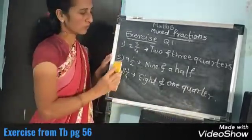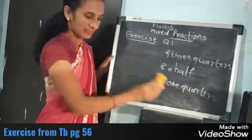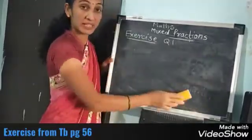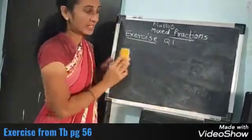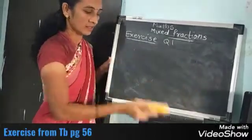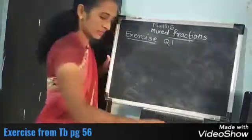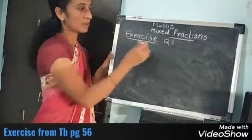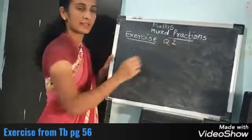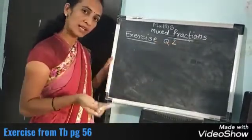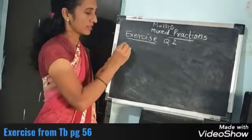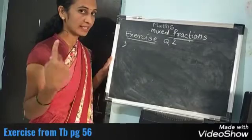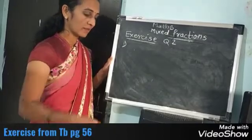Now we will see question number 2. What is question 2? Read the following fractions and write them in figures — write the fraction for those words. They have given you the fractions in words and you have to write them in figures. I will solve any two examples here.